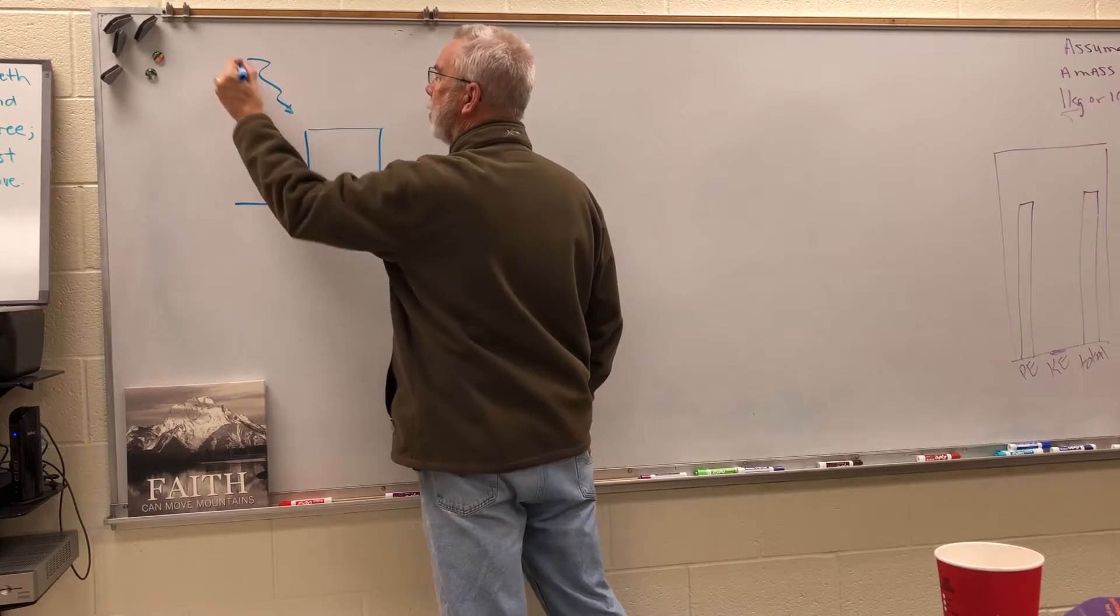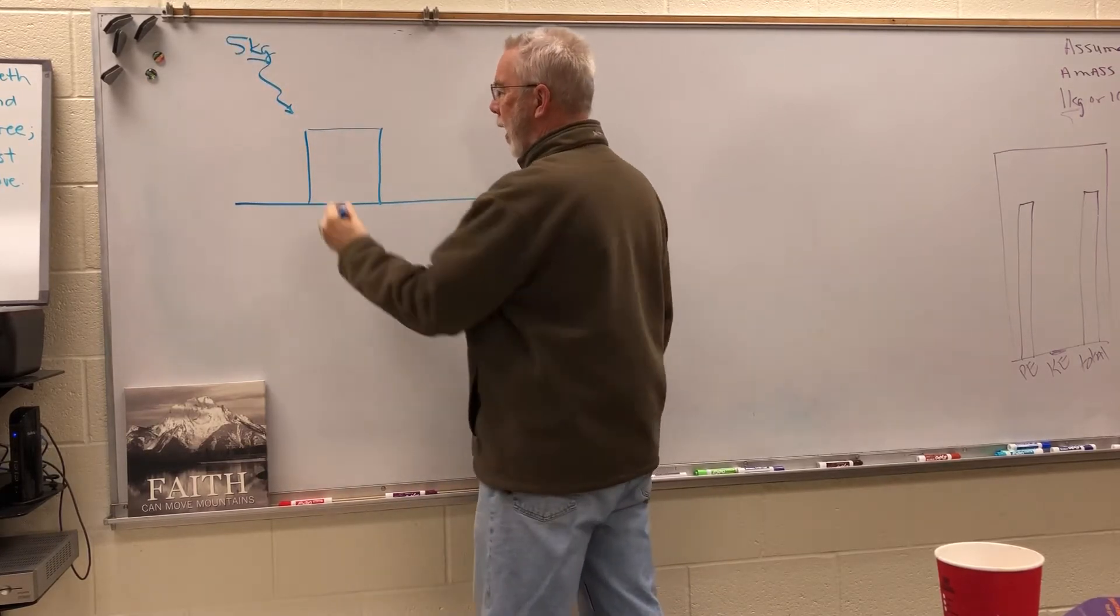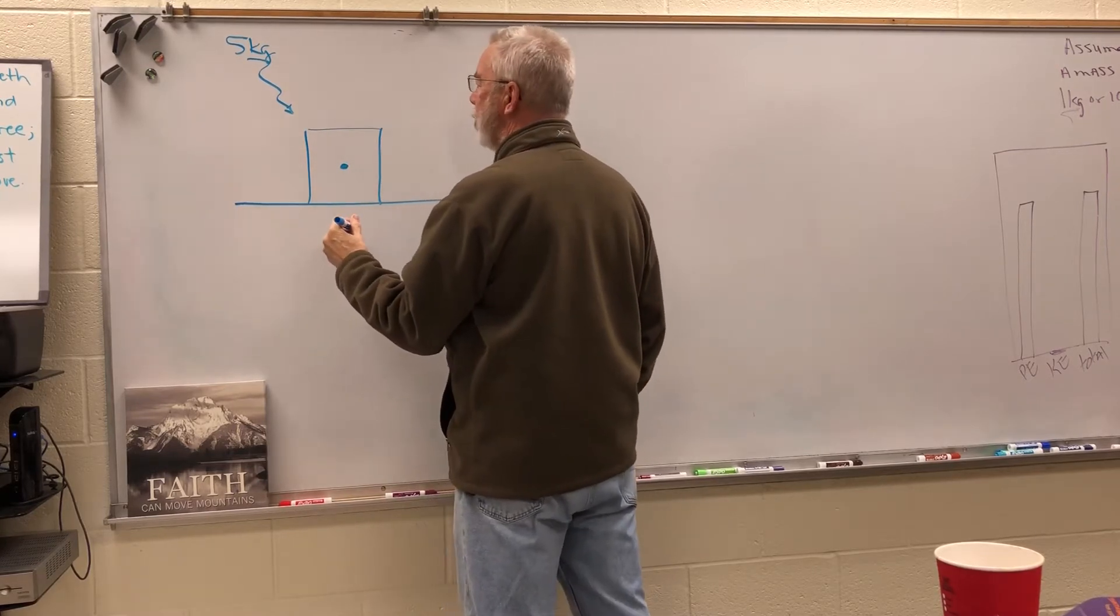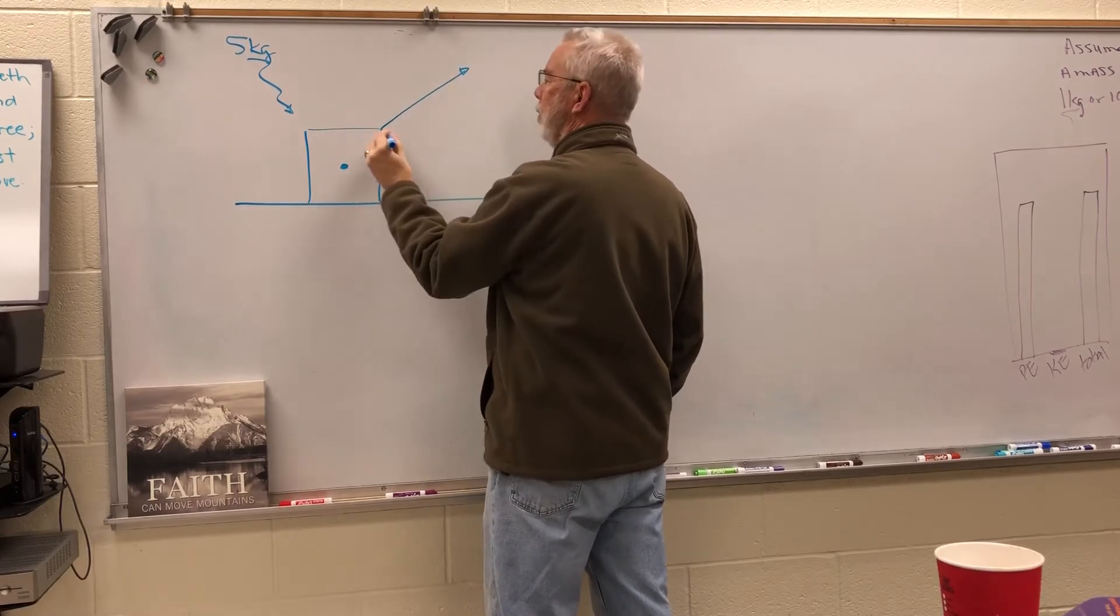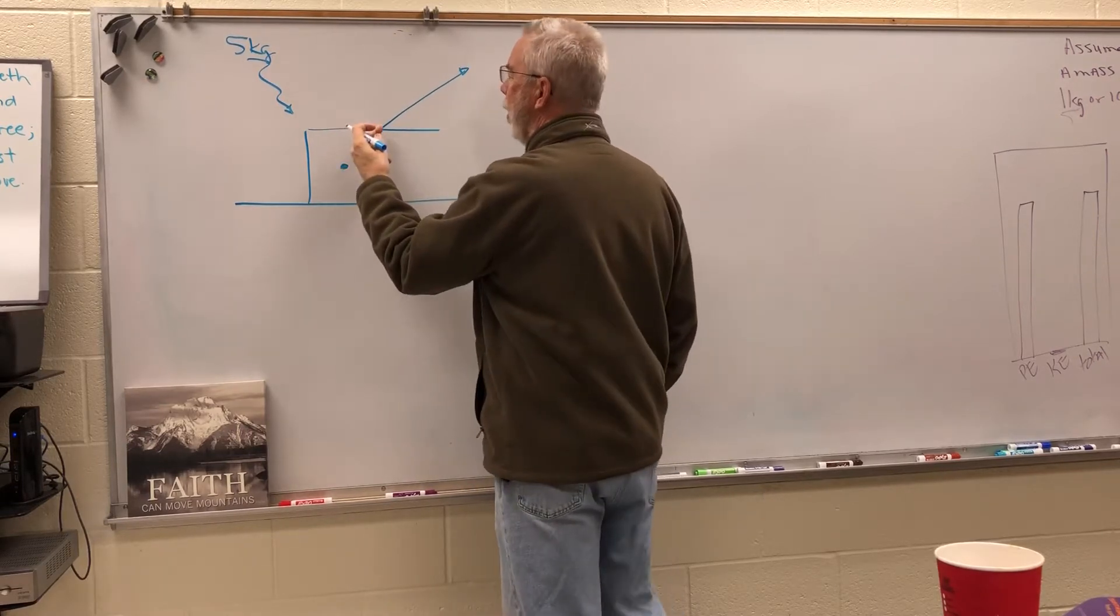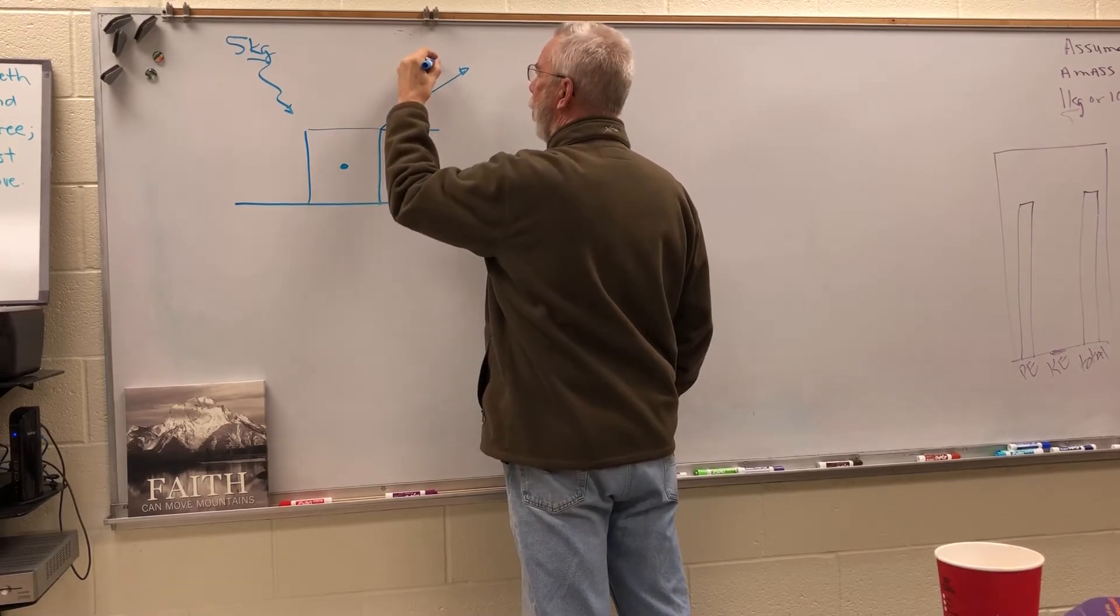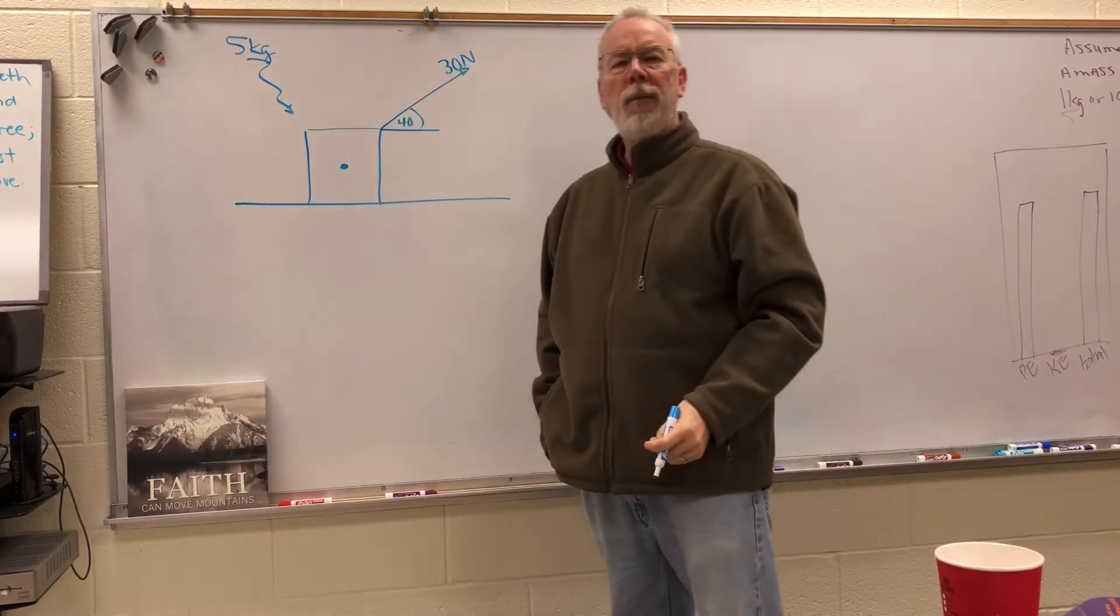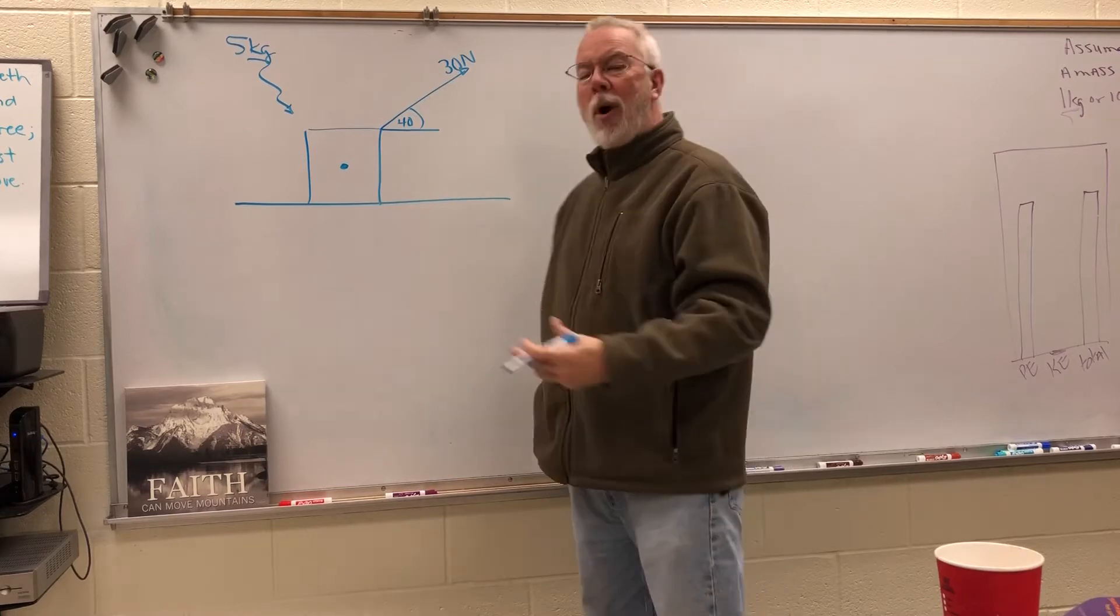That's important, so let's take a look at this right quick. Let's say that this box is still a five kilogram box, and we're applying a force up and to the right. We're pulling on this box up and to the right at a 40 degree angle with a force of 30 newtons.